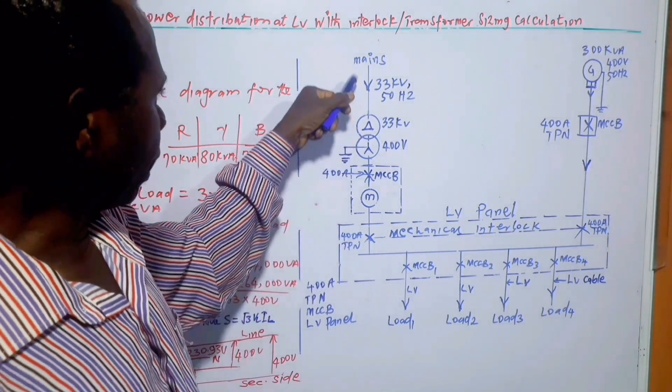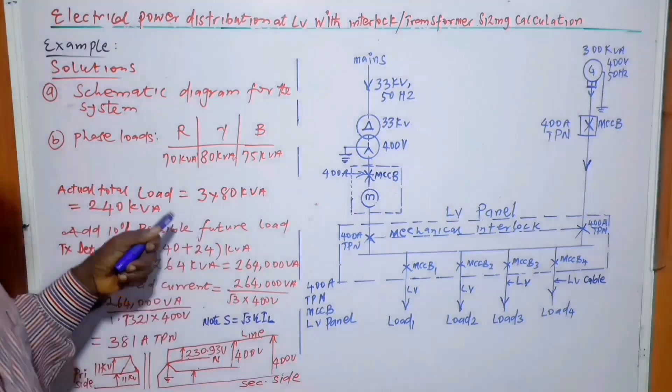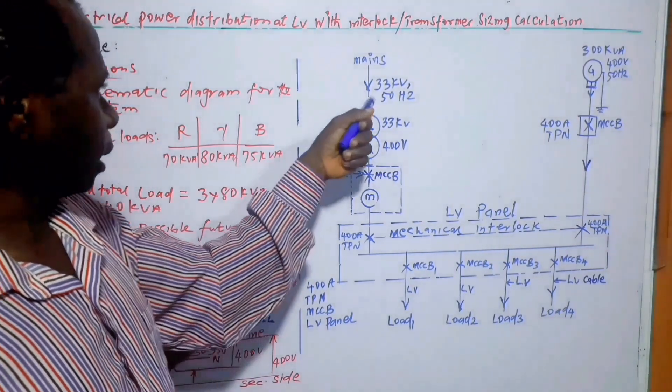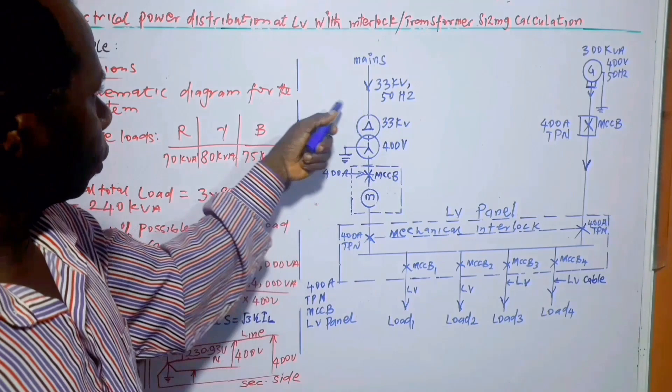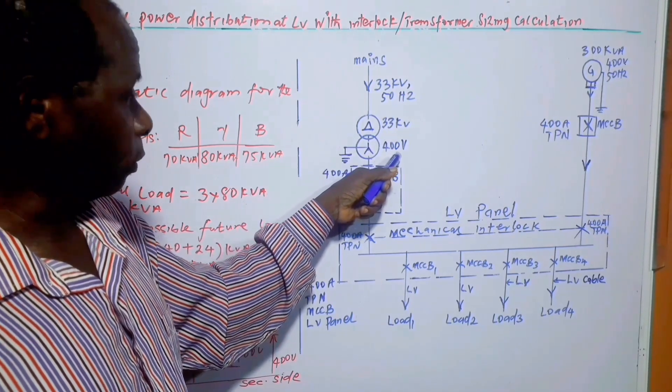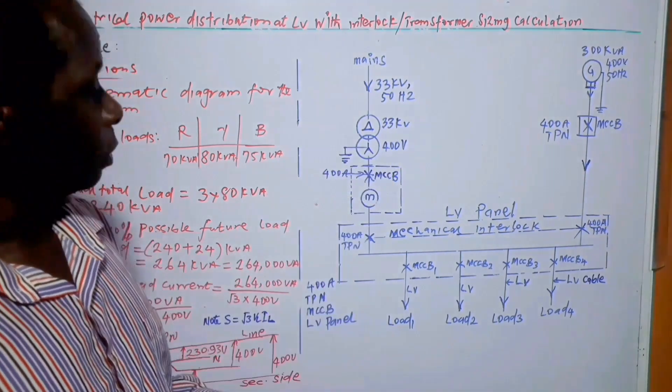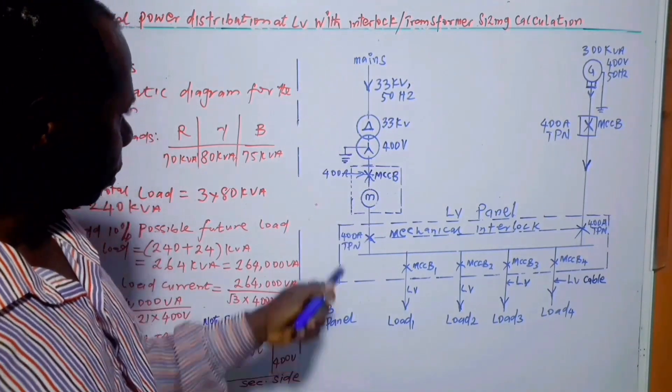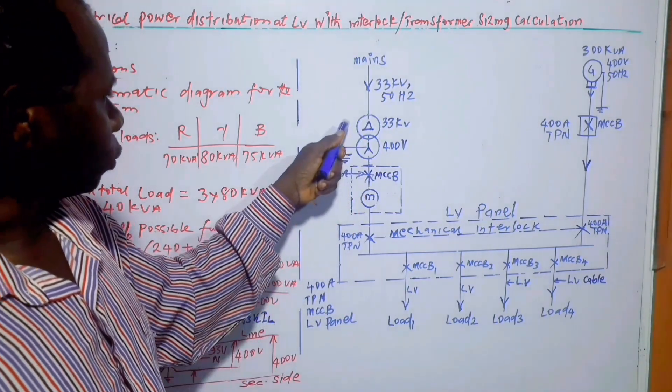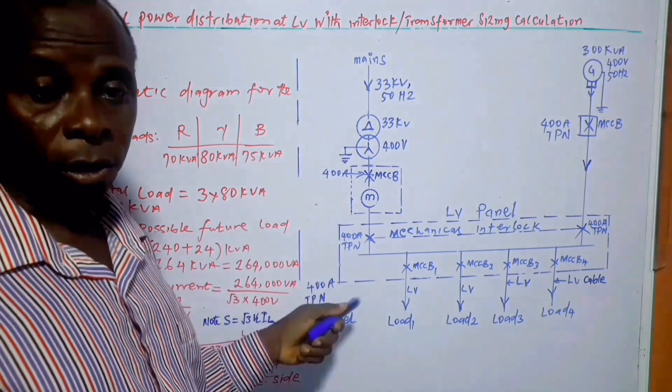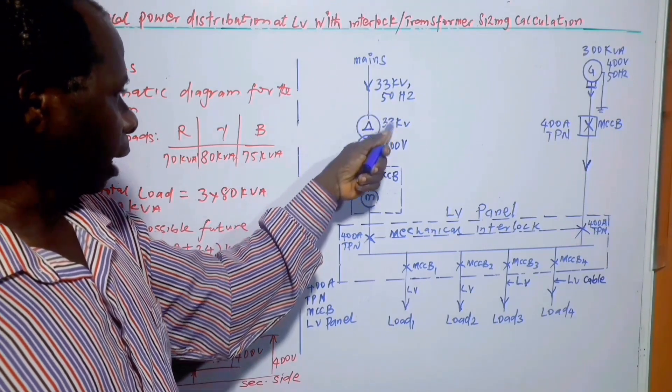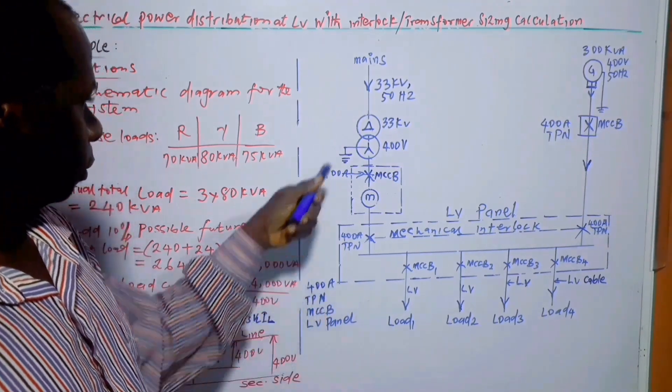So here we have the supply. Since the question says that the available voltage at the location of the building is 33 kV, that is why we are making use of 33 kV transformer. Step down transformer, of course, we have delta and star. Assuming it is 11 kV that is available, we use 11 kV. Since we can get a transformer that can step 33 kV to 400 volts, that's why we are using it.